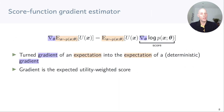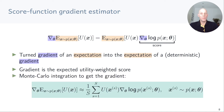To summarize, we have now written the gradient of the expected utility as an expected value of the utility times the score. That means we can use Monte Carlo integration to get the gradient: we sample from p, plug the samples into the utility times the score expression, sum up and divide by the number of samples. And this is the score function gradient estimator.